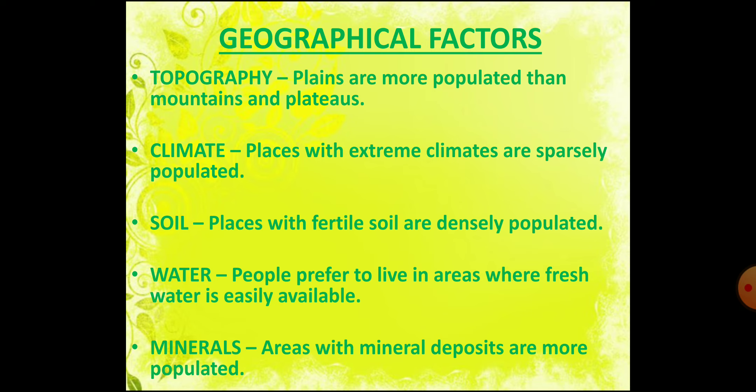Therefore, fertile plains like the Ganga and Brahmaputra in India, the Yangtze and Changjiang in China, and the Nile in Egypt are densely populated. Water is another very important factor. People always prefer to live where fresh water is easily available. Major river valleys of the world are densely populated, while deserts, which are dry, have sparse population.